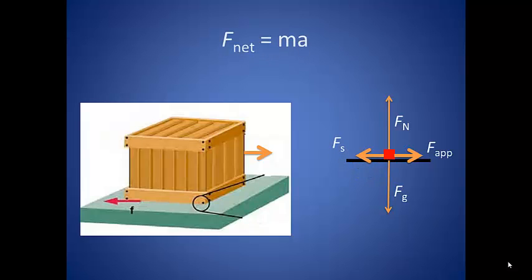Well, the net force acting on an object is equal to the mass times the acceleration. If our box is not moving, then there cannot be an acceleration, which means that our net force is zero. So if we are applying a force to the right, then there has to be an equal force acting to the left.